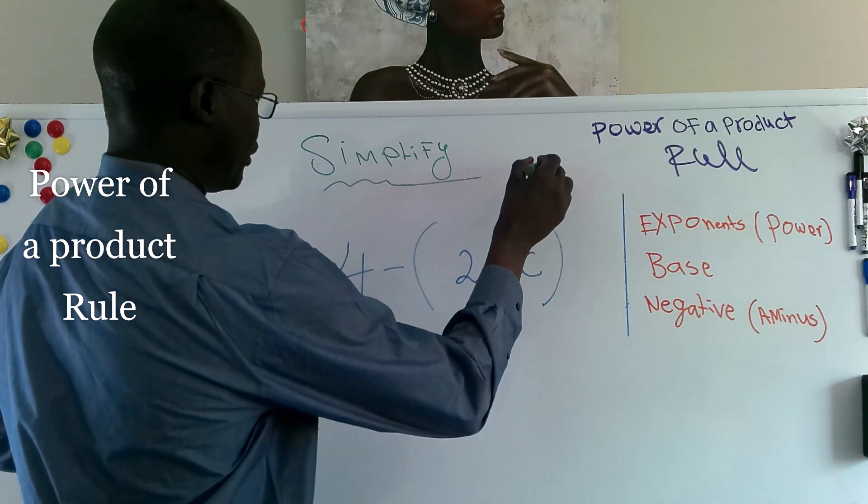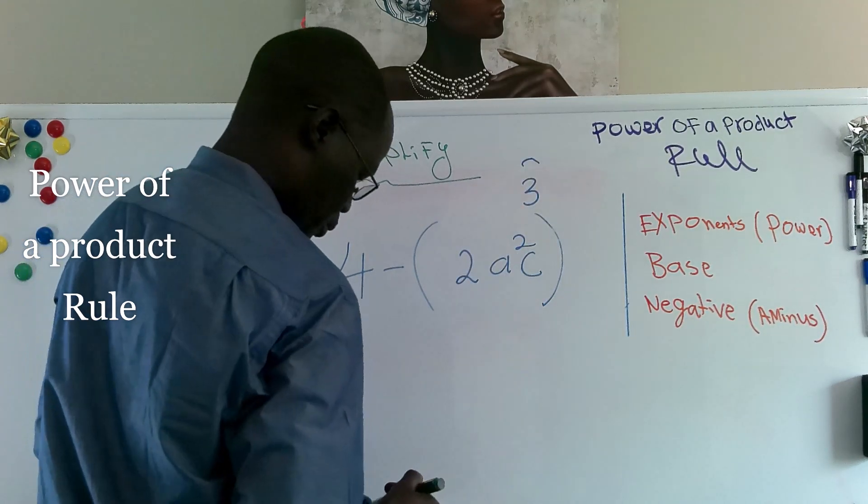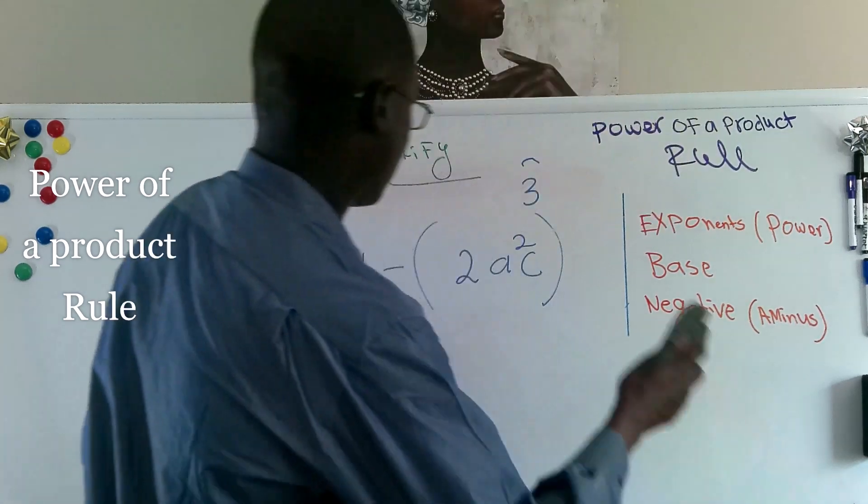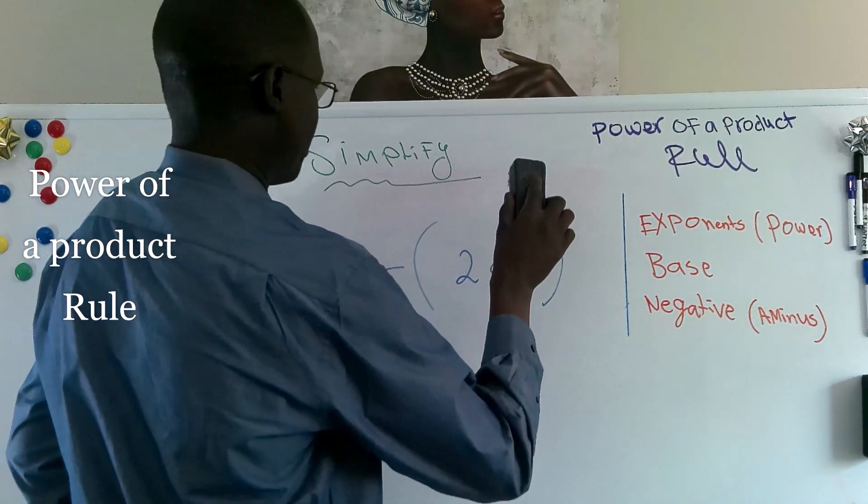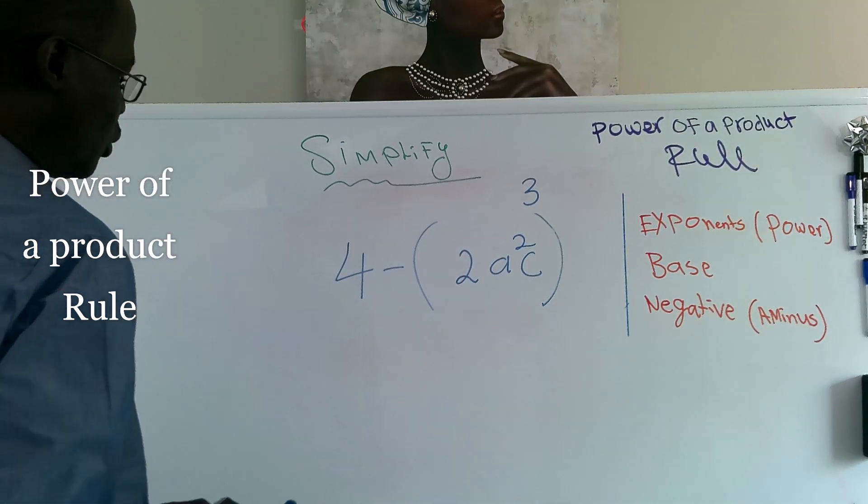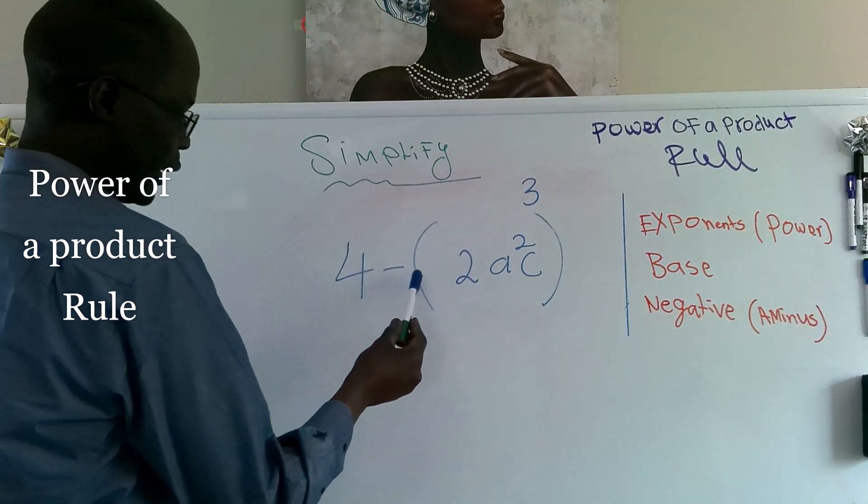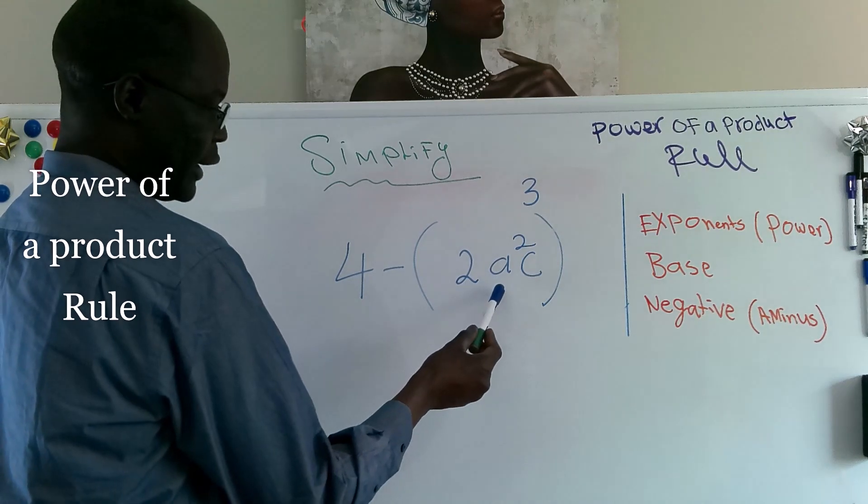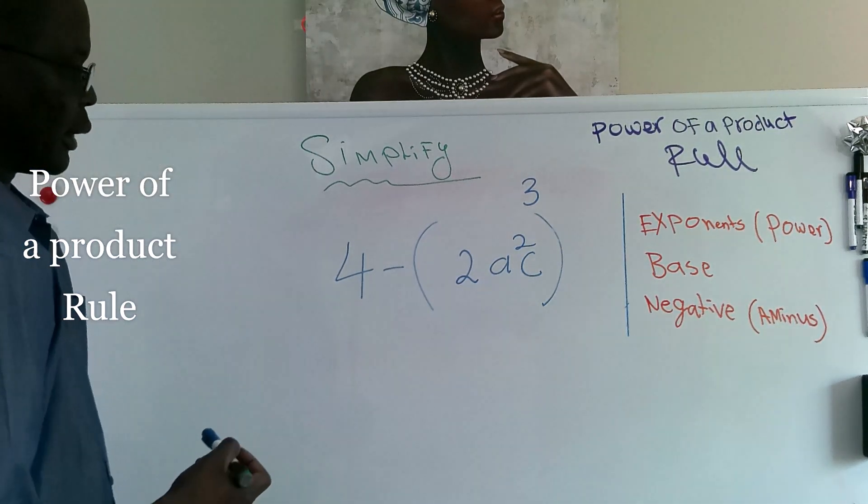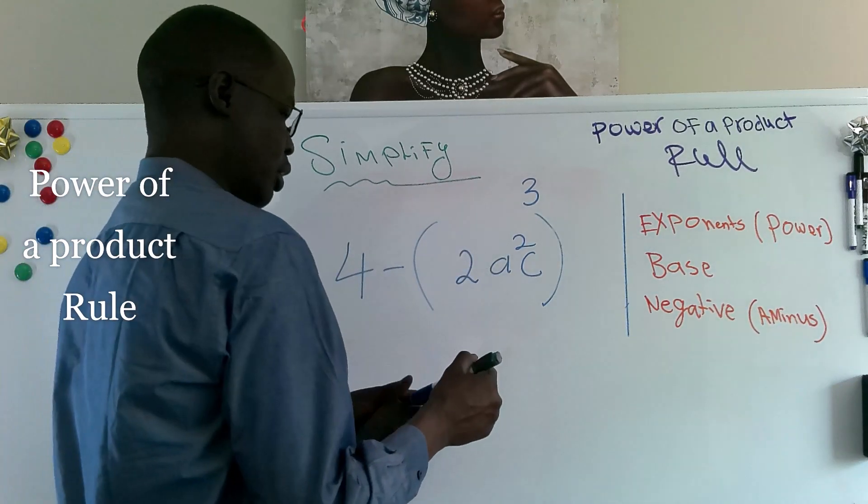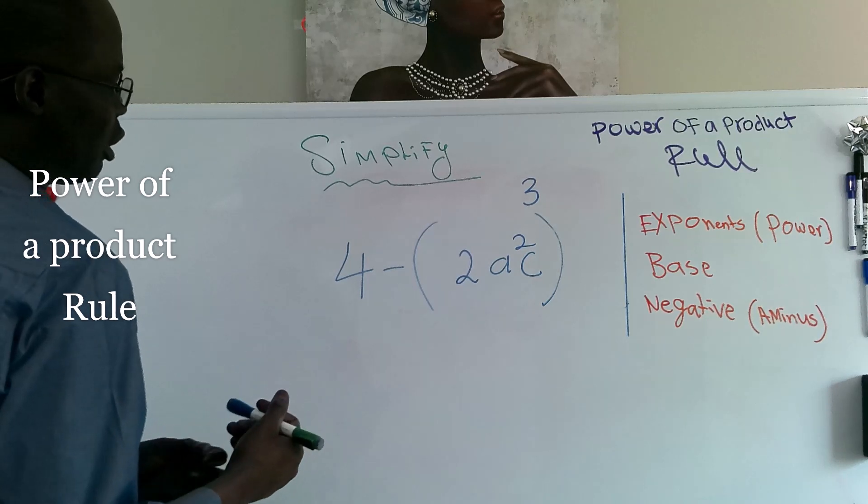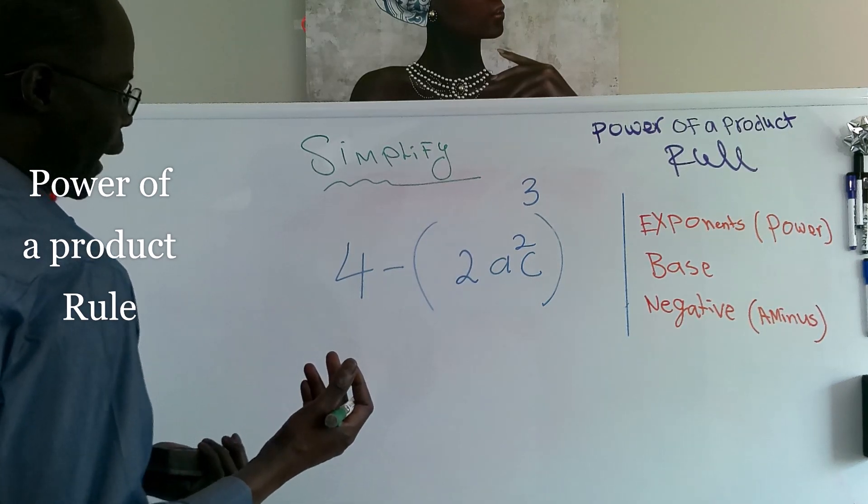The exponent of power is 3. We have 4 minus 2 times a times c squared, and the whole thing to third power or to 3 power.